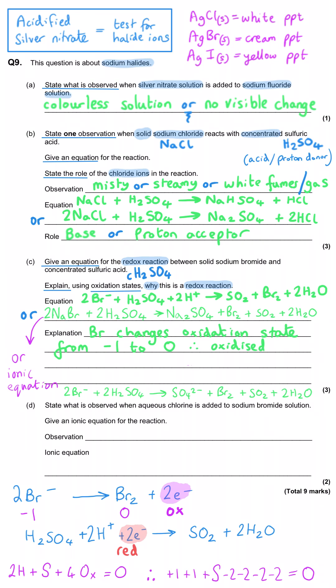So 2 plus sulfur minus 8 equals 0, which means the sulfur must be +6. Alternatively, you could have worked this out from simply the sulfate ion, where sulfur minus 8 is equal to -2. And then in the products in SO₂, we've got two oxygen at -2 each, which means that sulfur must be +4. So what we need to say to get us the mark is that sulfur has got an oxidation state change of +6 to +4, so it is being reduced.